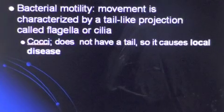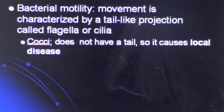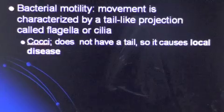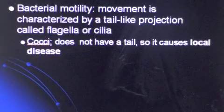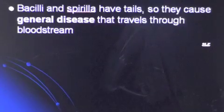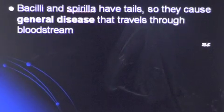Bacterial motility, or movement, is characterized by a tail-like projection called flagella or cilia. Cocci does not have a tail, so it causes local disease. Bacilli and spirula have tails, so they cause general disease that travels through the bloodstream.